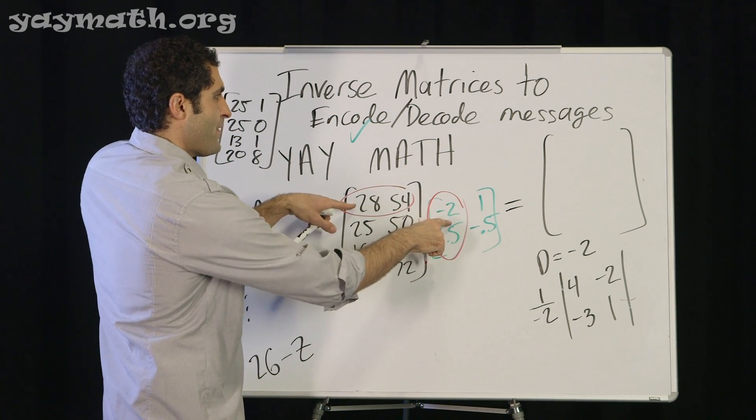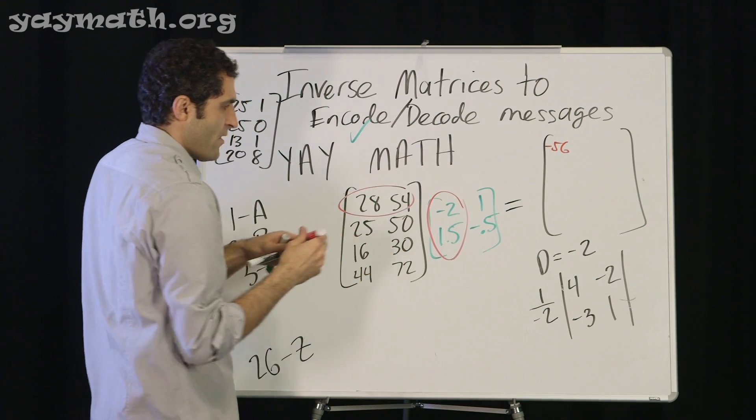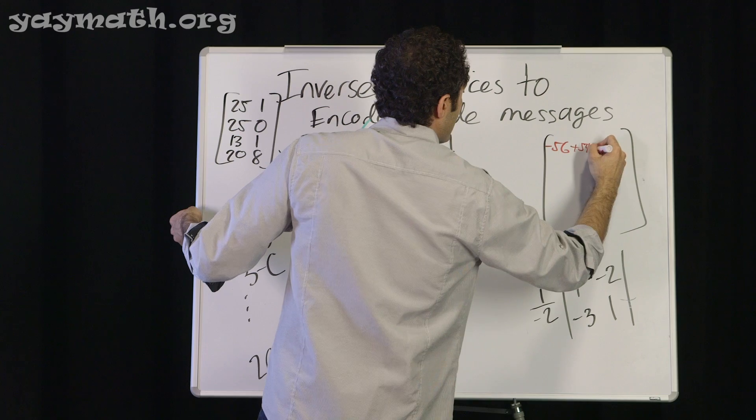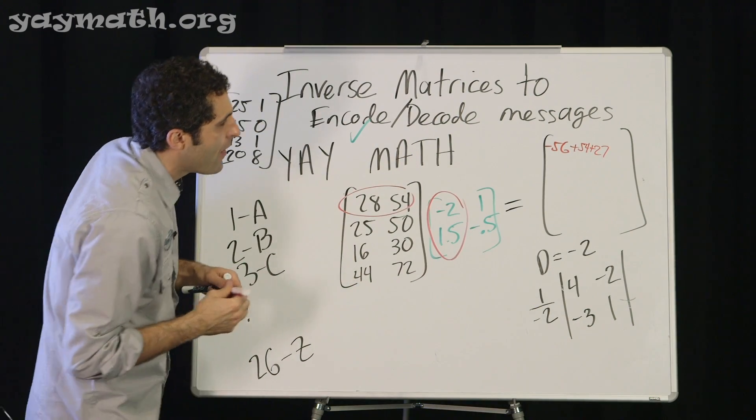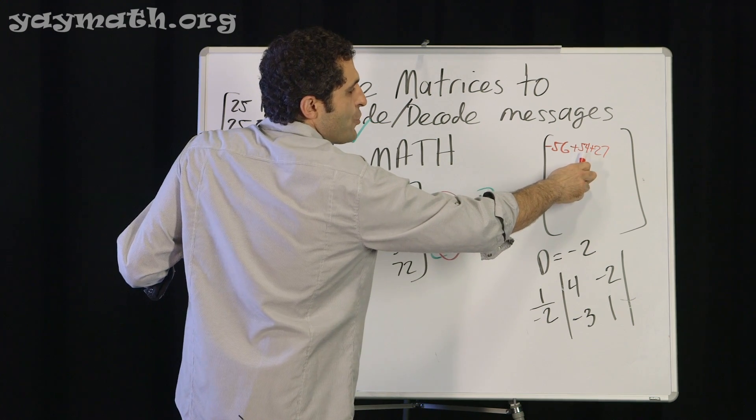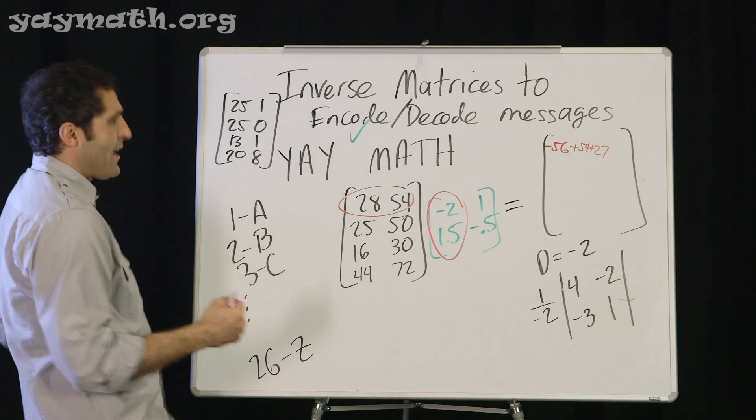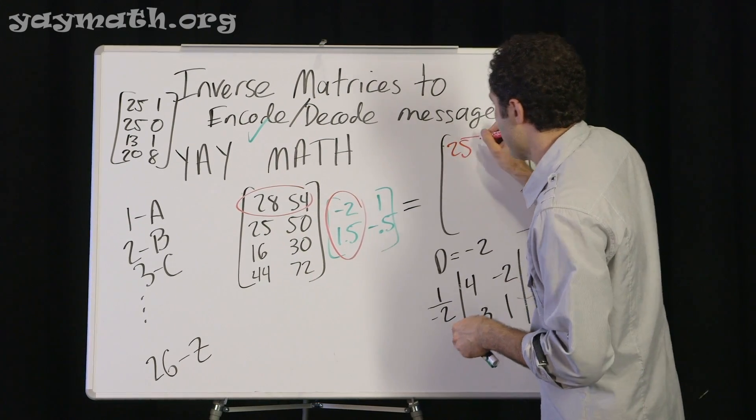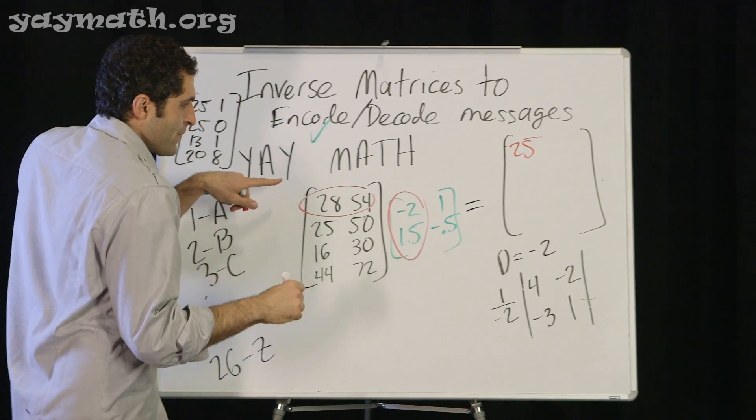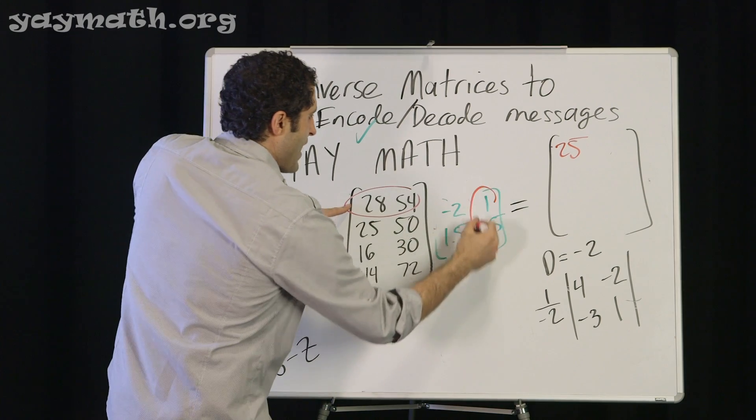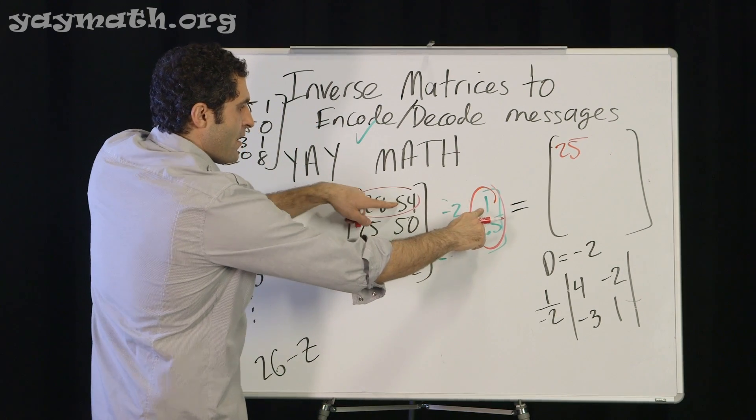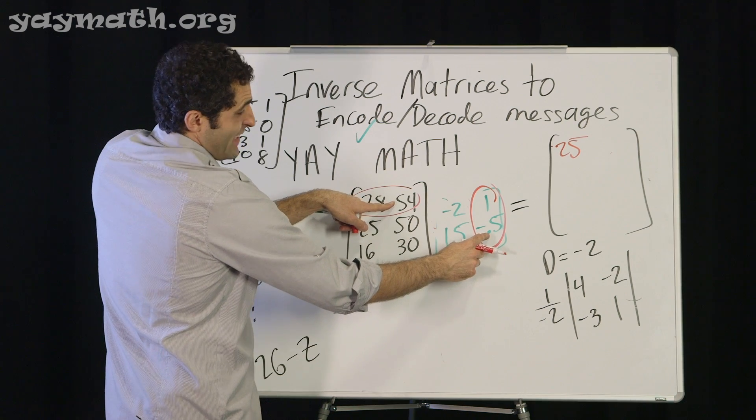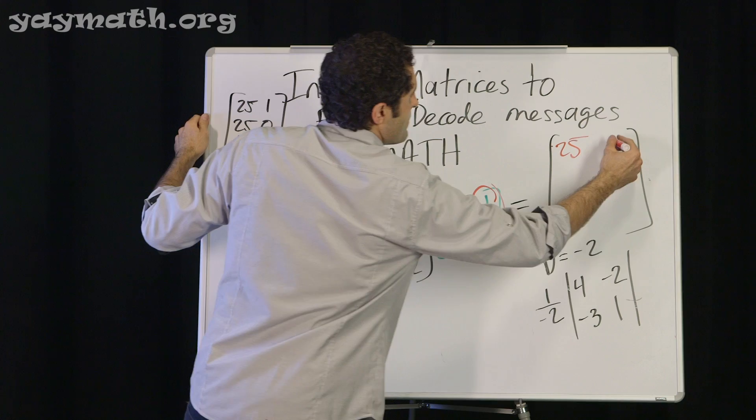28 times negative 2 is negative 56. That's negative 56 plus 1 and a half of 54, so that's 54 plus 27. That would become negative 56 plus 54 is negative 2. Negative 2 plus 27 is 25. Yes! Negative 2 plus 27, 25. Crushed it. So we're getting back, that's our Y. Let's do a couple more. We don't need to do the whole thing, just to verify. So that is 28 times 1 minus half of 54, that's 0.5 times 54. So that's 28 minus half of 54 is 27. 28 minus 27 is 1. Cool. We'll do one more row.